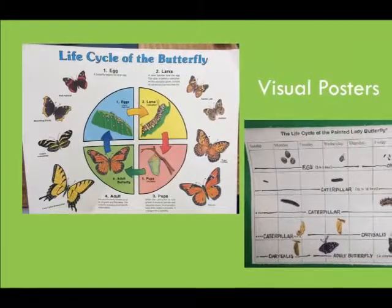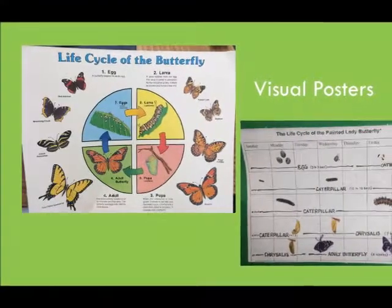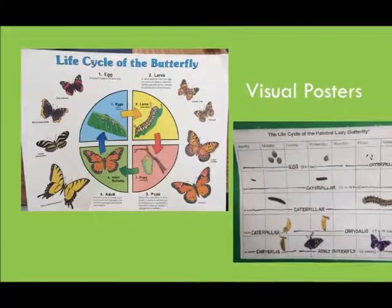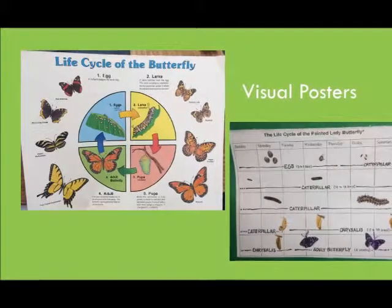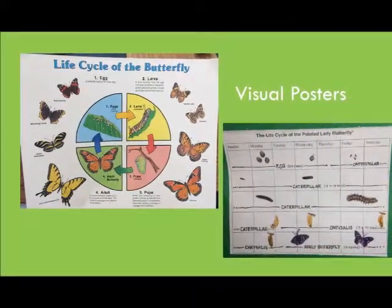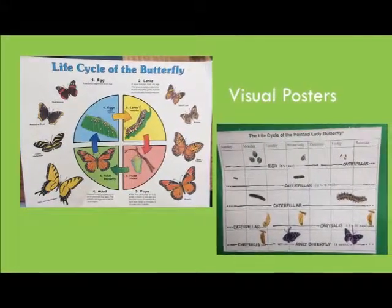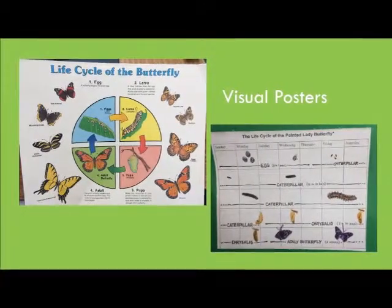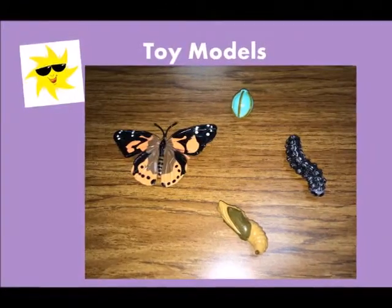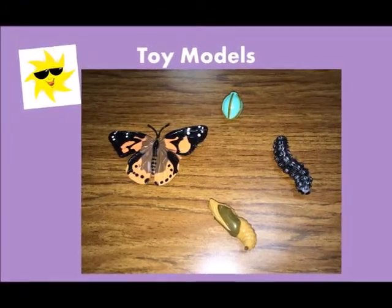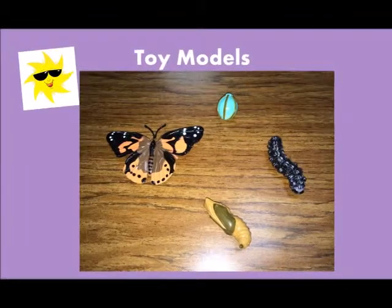Then, I explained to my students by showing them a visual poster of the life cycle of a butterfly. The students got the opportunity to see the transformation of a caterpillar to a butterfly. Then, I showed them the toy models that showed the stages of a butterfly.